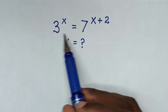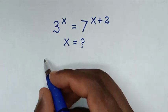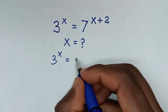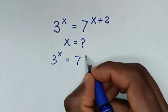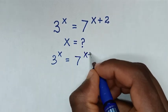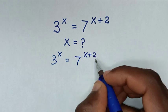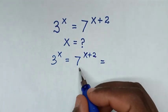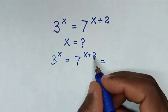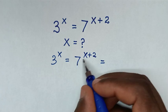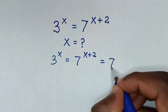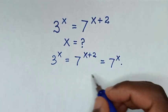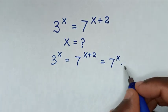From this equation, which is 3 power of x is equal to 7 power of x plus 2, it will be equal to 7 power of x plus 2, which is the same as 7 power of x times 7 power of 2.